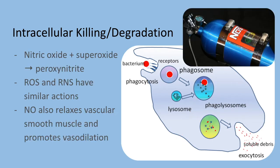Alongside that pathway that generates hydrogen peroxide and hypochlorite, in macrophages for example, nitric oxide can react with that superoxide and make another free radical called peroxynitrate. Similar to the reactive oxygen species, this can attack and damage lipids, proteins, and nucleic acids from microbes. And because reactive oxygen and reactive nitrogen species have overlapping actions, this is where a bit more redundancy comes into the immune system.